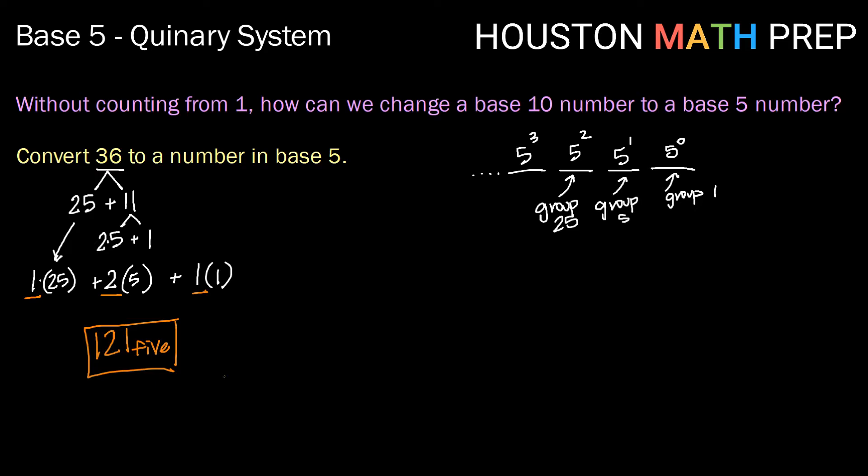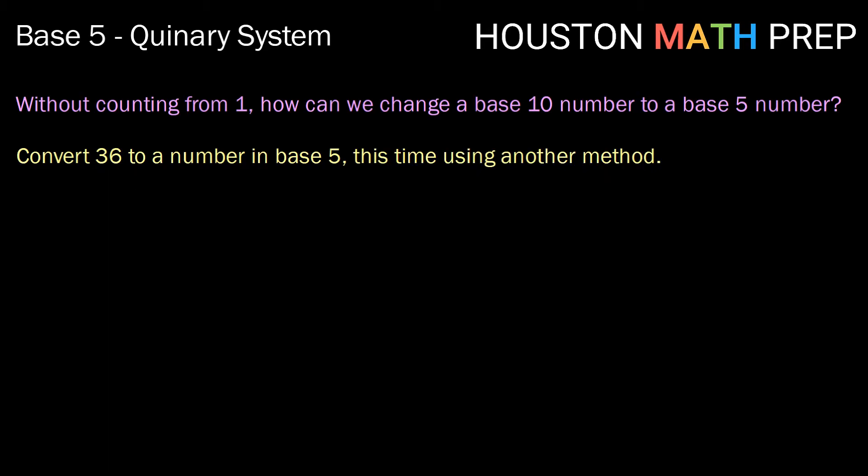Okay, I mentioned that there were multiple ways, so let's check out another method. Same question here, but now we want to use a different method. Especially if the number was quite large, it may not be very easy for us to know what power of 5 goes evenly into 36. So what we can do instead is we can take our number and we can just start dividing by our base, in this case 5. So if I divide 5 into 36, well, 5 times 7 is 35. So my result would be 7 remainder 1. So I'm going to write my result just like that. How many times does it go in, and then whatever remainder I have outside.